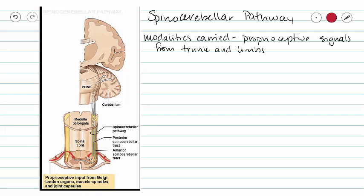The modalities carried by the spinocerebellar pathway include proprioceptive information from our trunk and limbs. Here we see Golgi tendon organs, muscle spindles, and joint capsules — these are all sensory receptors that take in proprioceptive information.